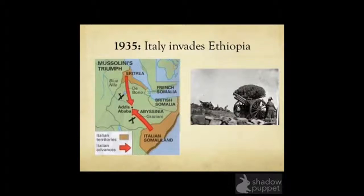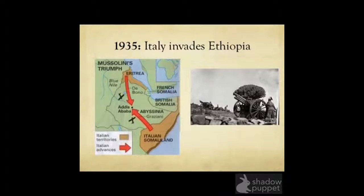A modern Italian army faced a traditional Ethiopian army armed with guns and spears. When Ethiopia appealed to the League of Nations, the League supported their claim but didn't have an army to respond. Instead, the League asked its members to apply economic sanctions to Italy, including an arms embargo and a boycott. This wasn't enough to deter Italy. The Italians won Ethiopia in 1936 and made their first gain.